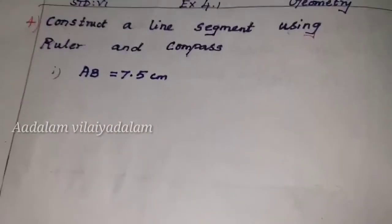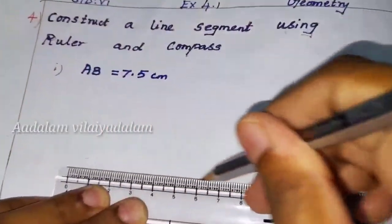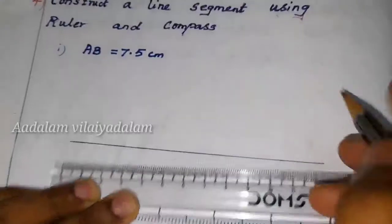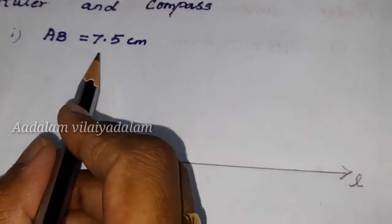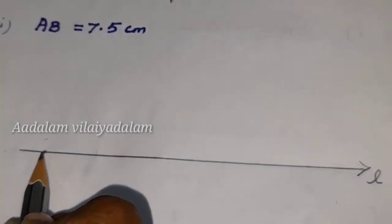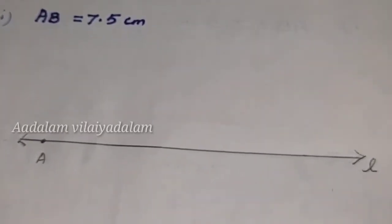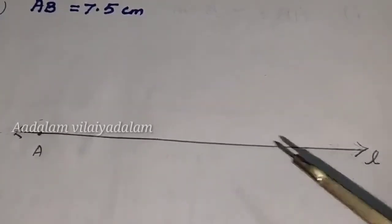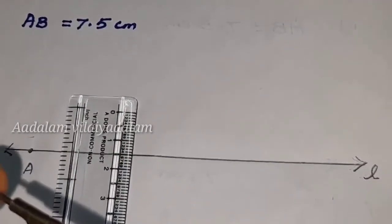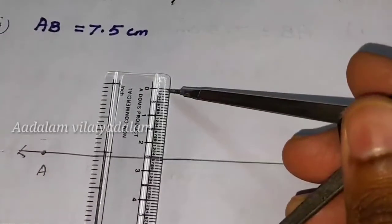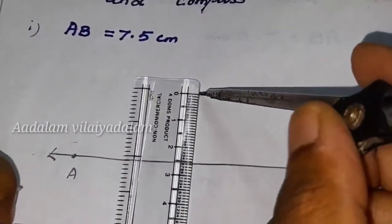First draw the line L. Here AB equals 7.5. Mark the first point A. Now using the compass, measure the value 7.5 cm. Place the pointer of the compass at 0, then place the pointer of the pencil at 7.5.